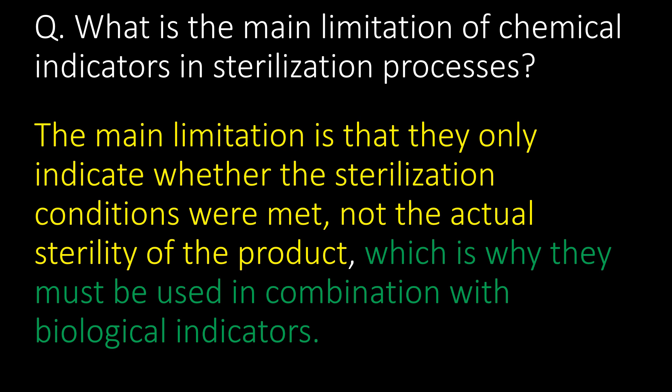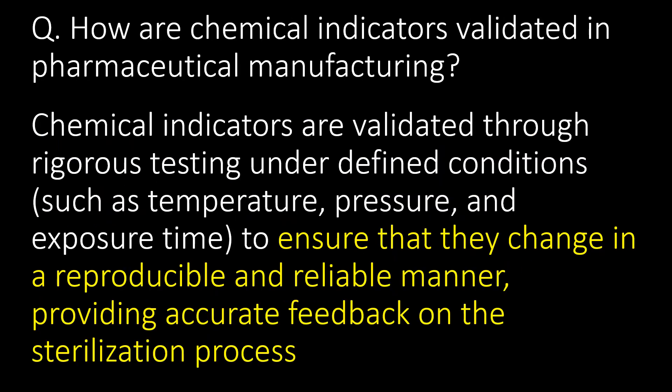What is the main limitation of chemical indicators in sterilization processes? The main limitation is that they only indicate whether the sterilization conditions were met, not the actual sterility of the product, which is why they must be used in combination with biological indicators. How are chemical indicators validated in pharmaceutical manufacturing? Chemical indicators are validated through rigorous testing under defined conditions such as temperature, pressure, and exposure time to ensure that they change in a reproducible and reliable manner, providing accurate feedback on the sterilization process.